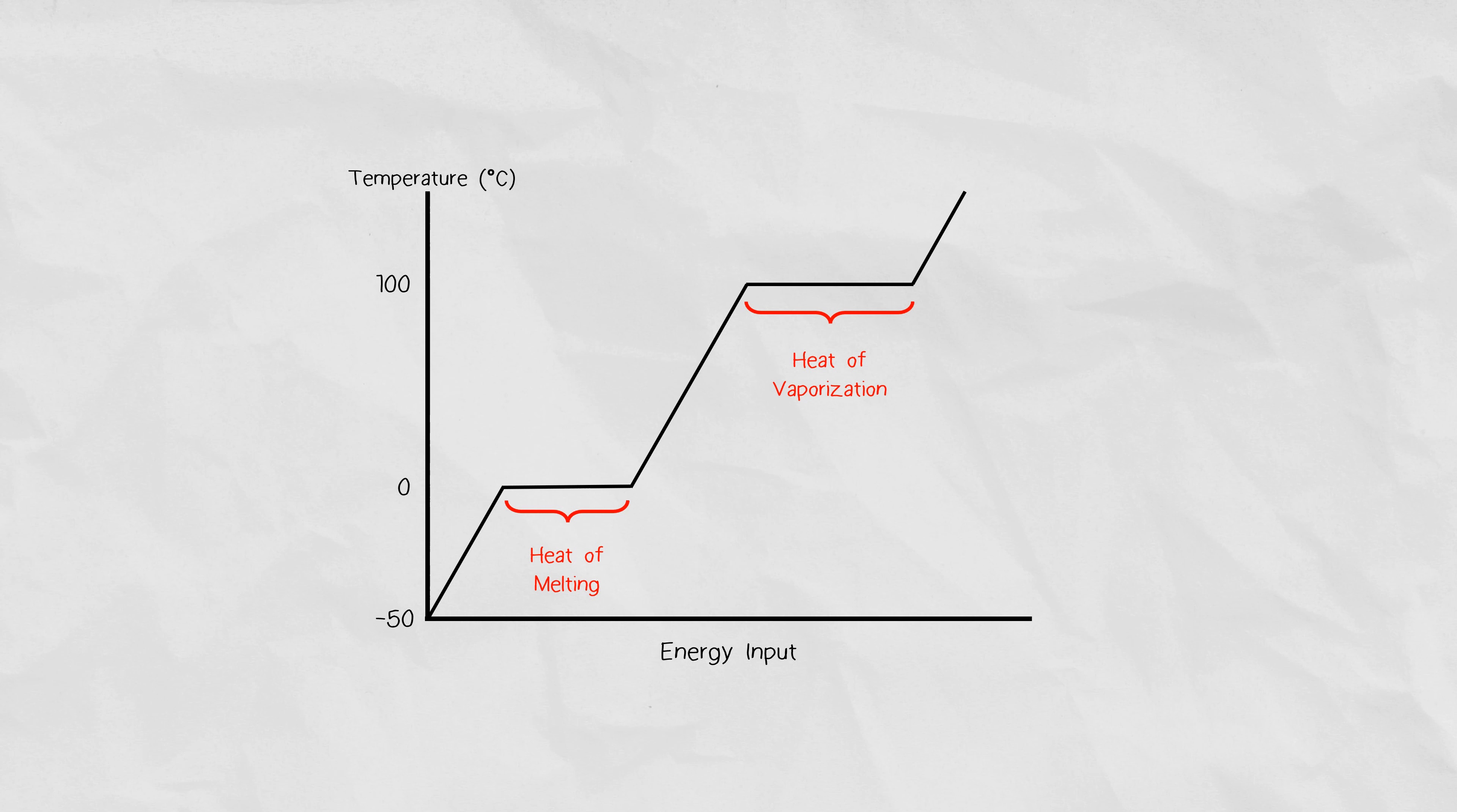If we have steam at 100 degrees Celsius, it has to release energy by condensing first, turning into liquid water at 100 degrees. This is known as the heat of condensation. The value of the heat of condensation is the exact same as the heat of vaporization, except with a negative value, because you are removing energy from the gas to form a liquid.